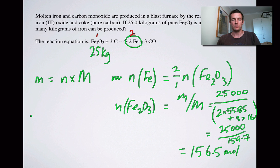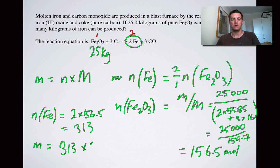We know that the number of moles of iron is twice that number. So 2 times 156.5, which equals 313. So we've got 313 moles of iron. So the mass is 313 multiplied by 55.85, which is the molar mass of iron. And that equals 17.5 kilograms or 17,500 grams. So there's my final answer.